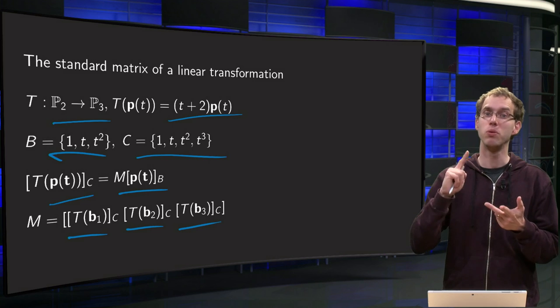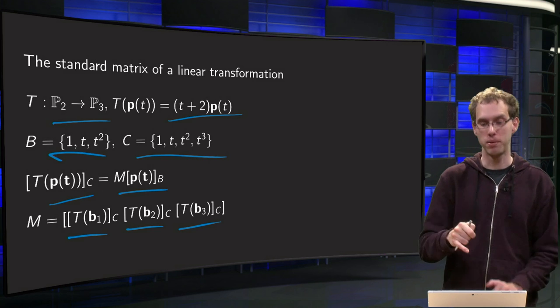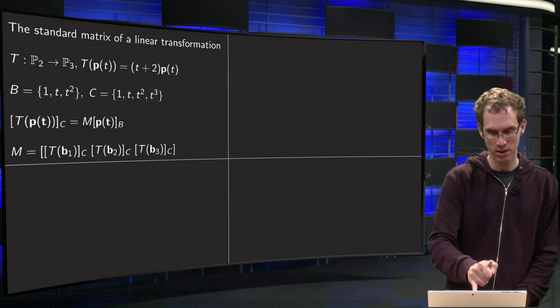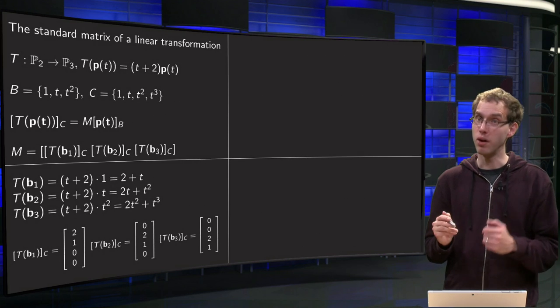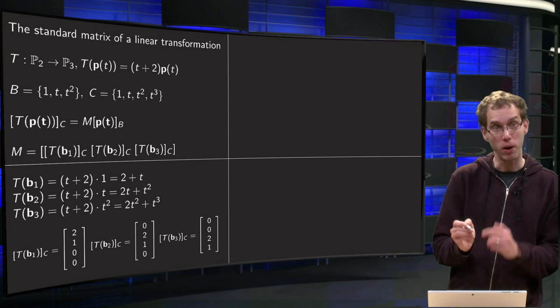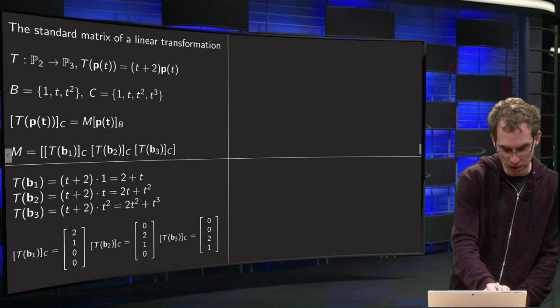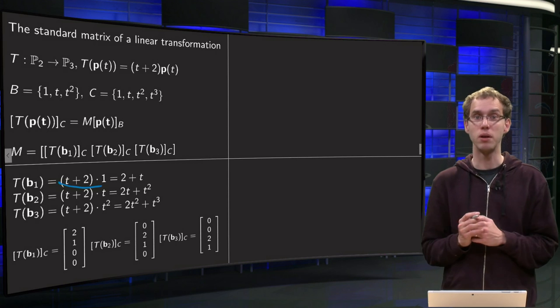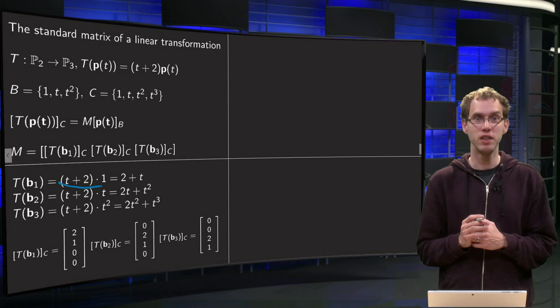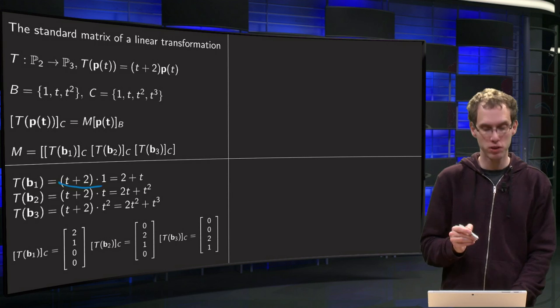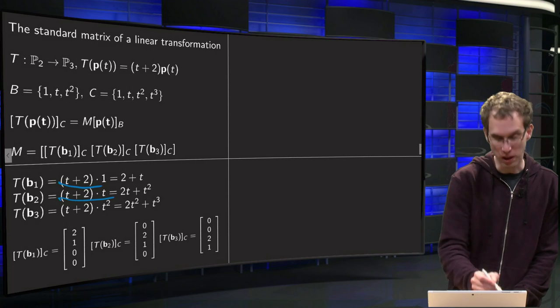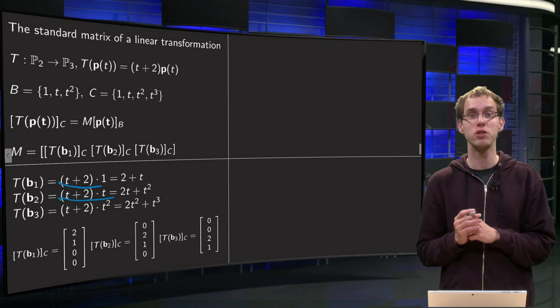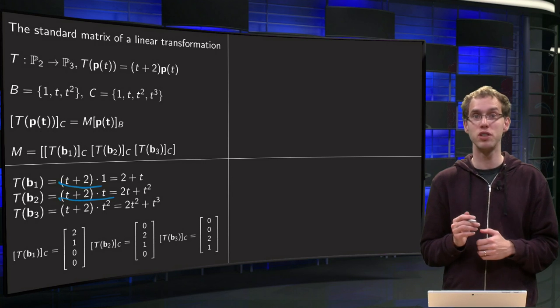So what do we have to do? We have to find T(b₁), T(b₂), T(b₃) and compute them in the basis C. So there we go. First we compute T(b₁). Well b₁ is 1. So T(b₁) is just (t + 2) times 1 which is 2 + t. Then we continue with T(b₂). That is (t + 2) times t because b₂ equals t. So that equals 2t + t². And finally the T(b₃).